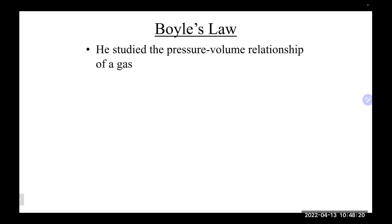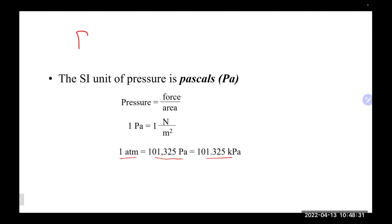Let's talk about some gas laws. When we talk about gas laws, there are really three variables we deal with: pressure, volume, and temperature. A lot of gas laws keep one of these things constant and vary the others, though sometimes we use all three together.